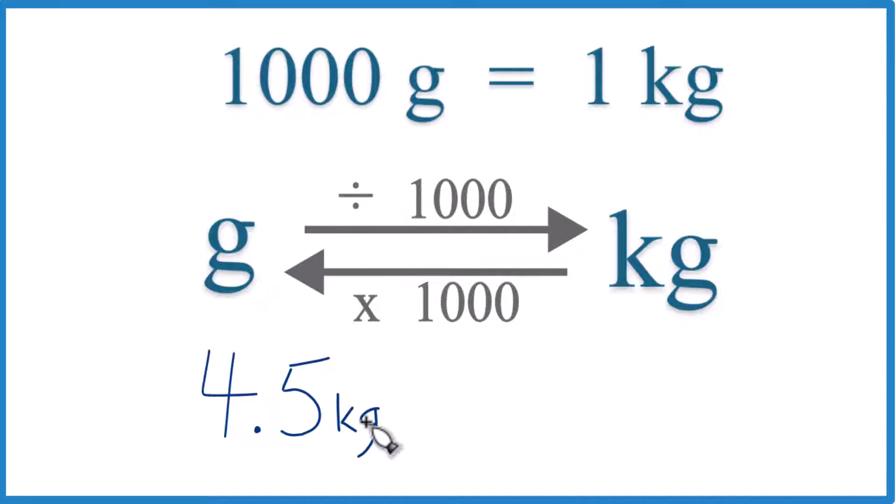In this case, we have 4.5 kilograms and we want grams. So kilograms to grams, we're going to multiply by a thousand.